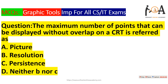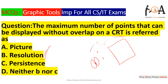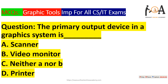The next question is: the maximum number of points that can be displayed without overlap on a CRT is referred as? The maximum number of points you can display without overlapping on a CRT is called resolution. It is a property of resolution — how many maximum points we can show without any overlap on a CRT.